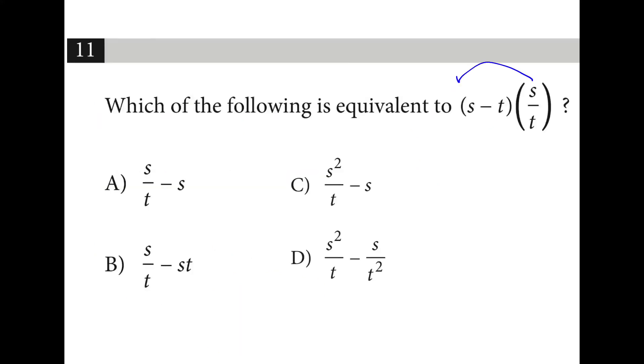So you can think of it as distributing s over t to each of these terms, and then you'll have s squared over t for the 1, and you'll have st minus st over t for the other, and these cancel out, so it's just minus s. So we have s squared over t minus s.